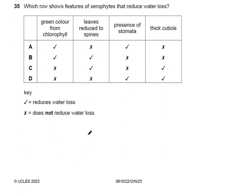Question 35: which features of xerophytes reduce water loss? Xerophytes — desert plants — have leaves reduced to spines, sunken stomata, and a very thick cuticle to prevent excessive transpiration. The correct option must include leaves reduced to spines and a thick cuticle. The answer is C.